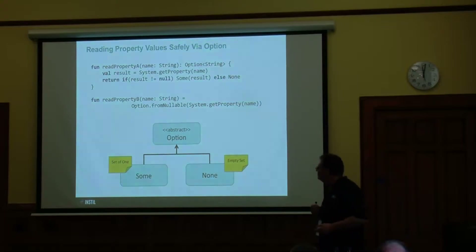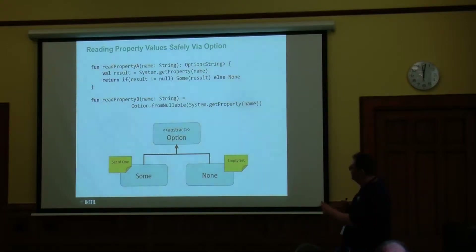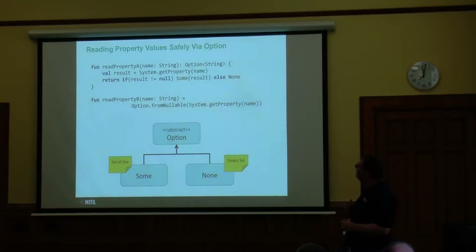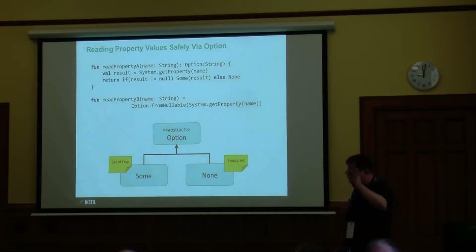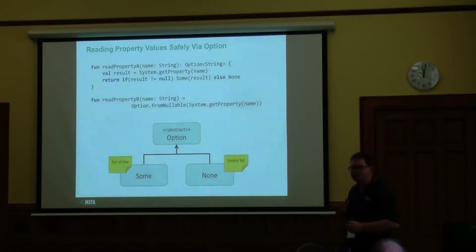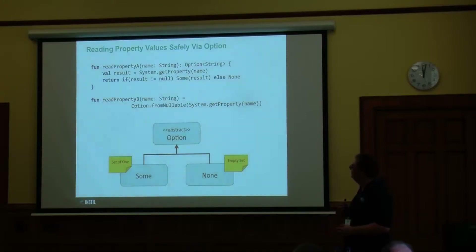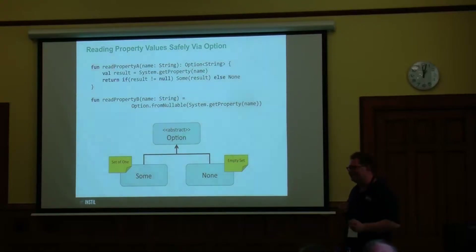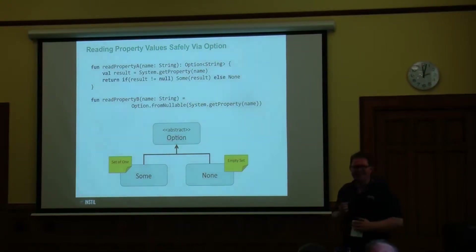What is Option? You can think of Option as an abstract base class, and coming off that you've got Some and None. A Some is a set of one and None is a set of zero. Here's a classic example: let's say we want to call system.getProperty. If I say system.getProperty("java.version") it'll return like "8.something"; but if I say system.getProperty("Wibble") I'm going to get back null. One way to handle that is: if the result was null, return a Some of result, otherwise return a None. So it's declared as returning an Option of String — just a set of either one member or zero members. The top way is good for learning; the bottom way is how you'd actually do it.